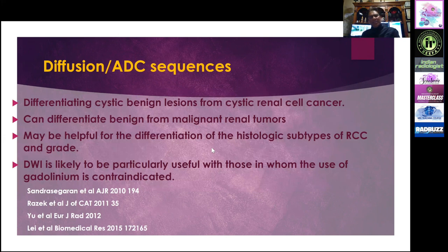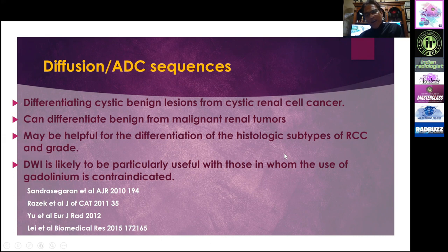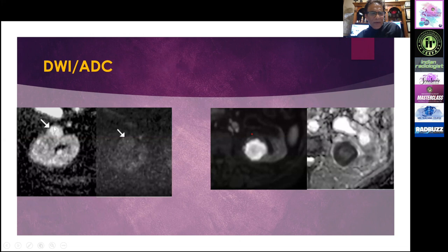Diffusion-weighted imaging and ADC sequences are especially helpful in differentiating cystic benign lesions from cystic renal cell cancers, can differentiate benign from malignant renal tumors, and may help differentiate histologic subtype or grade the tumor. DWI is also useful when gadolinium cannot be given. A low-grade oncocytoma shows hardly any restriction, whereas a clear cell renal cell carcinoma shows marked restriction and low ADC — very helpful.